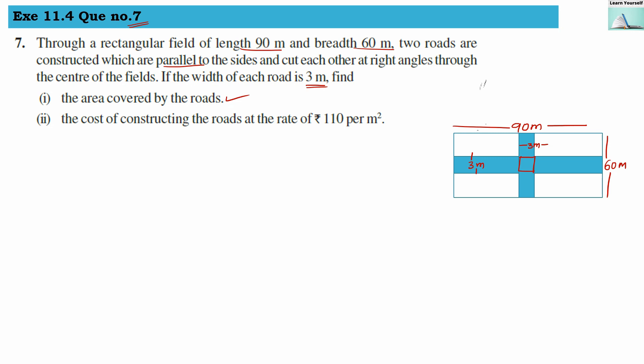We have to find out the area covered by the roads and the cost of constructing the road at ₹110 per meter square. First, we find the area of the field: area = l × b = 90 × 60 = 5400 meter square. This is our first answer.